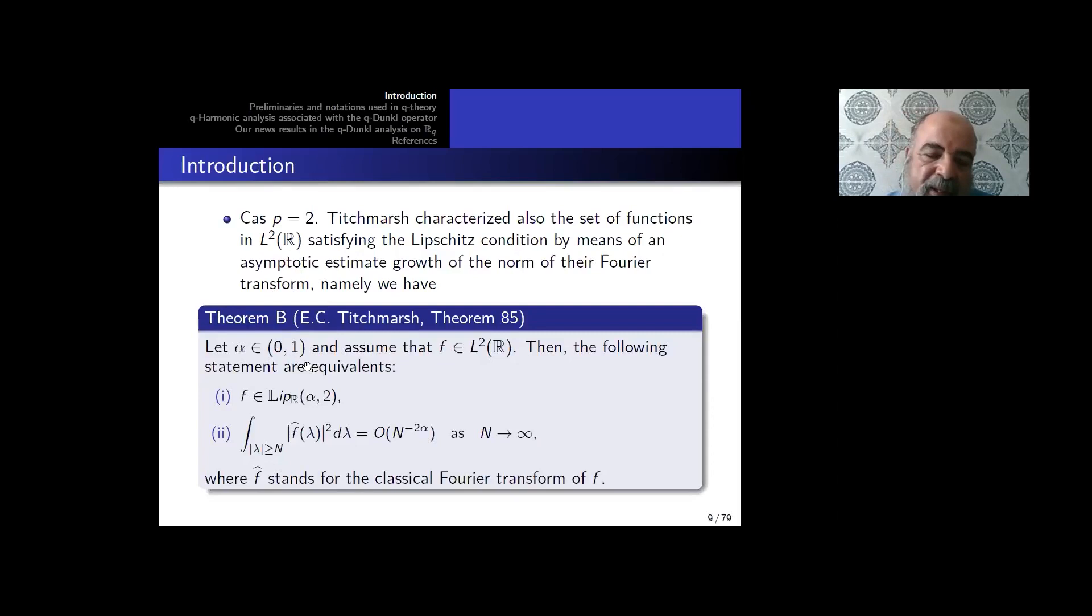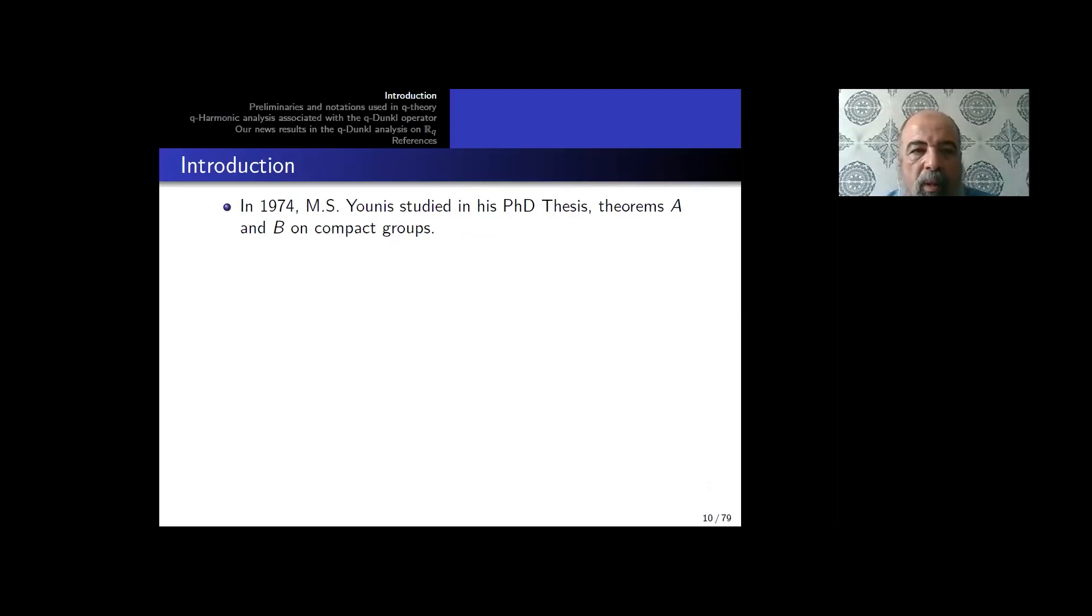When we have this, if the function also satisfies certain conditions, we have some equivalence of this condition. So this theorem is from 1974 on compact groups, and in 1987 there was an extension of this condition by another condition between the Lipschitz condition, so we put some logarithmic terms here, and the analog of this.